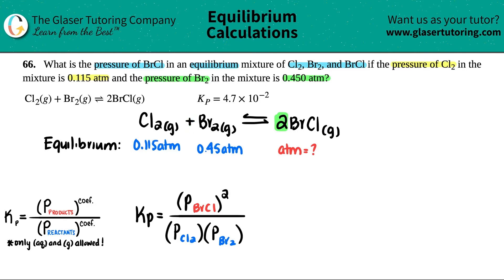Let's see what I have. They gave me the Kp number 4.7 × 10⁻², the pressure of Cl₂ 0.115, and the pressure of Br₂ which is 0.45. Looks like we're just solving for this one.